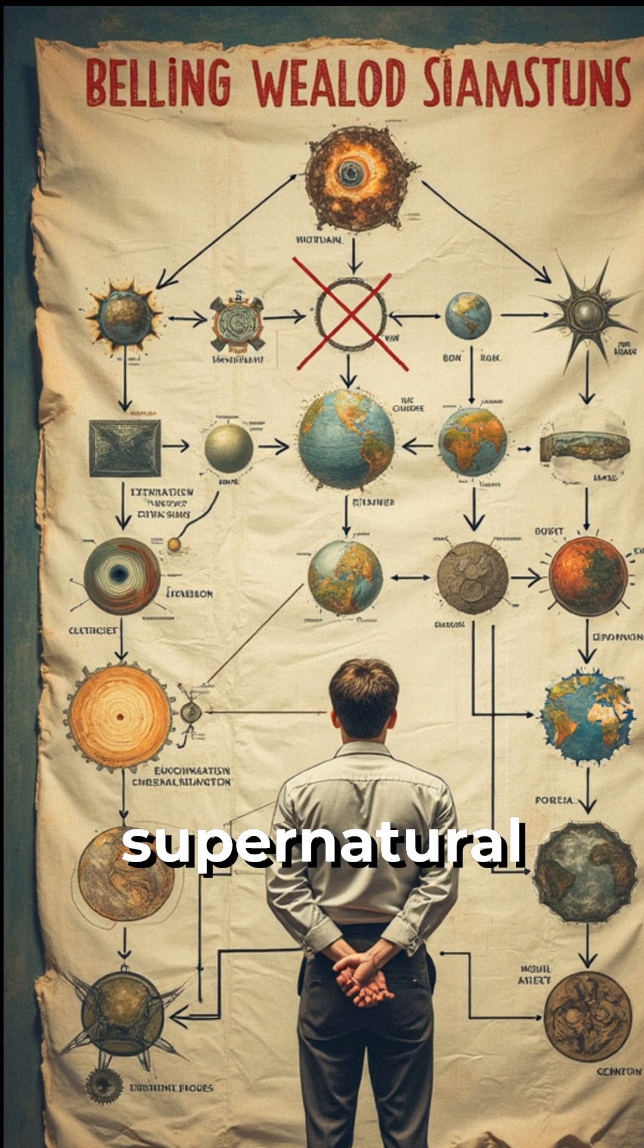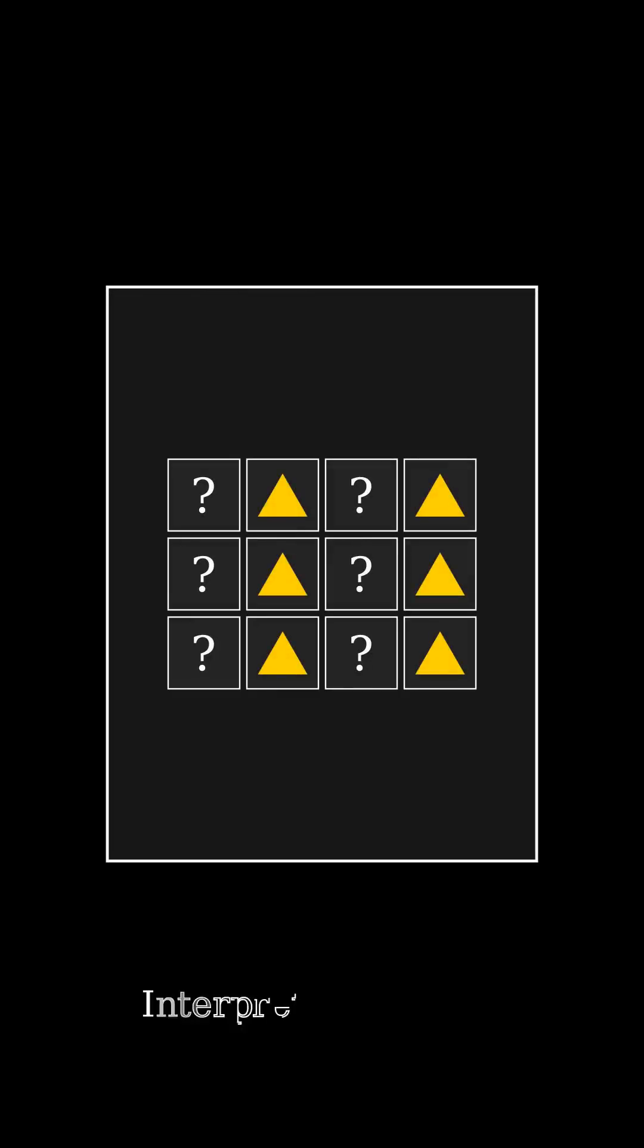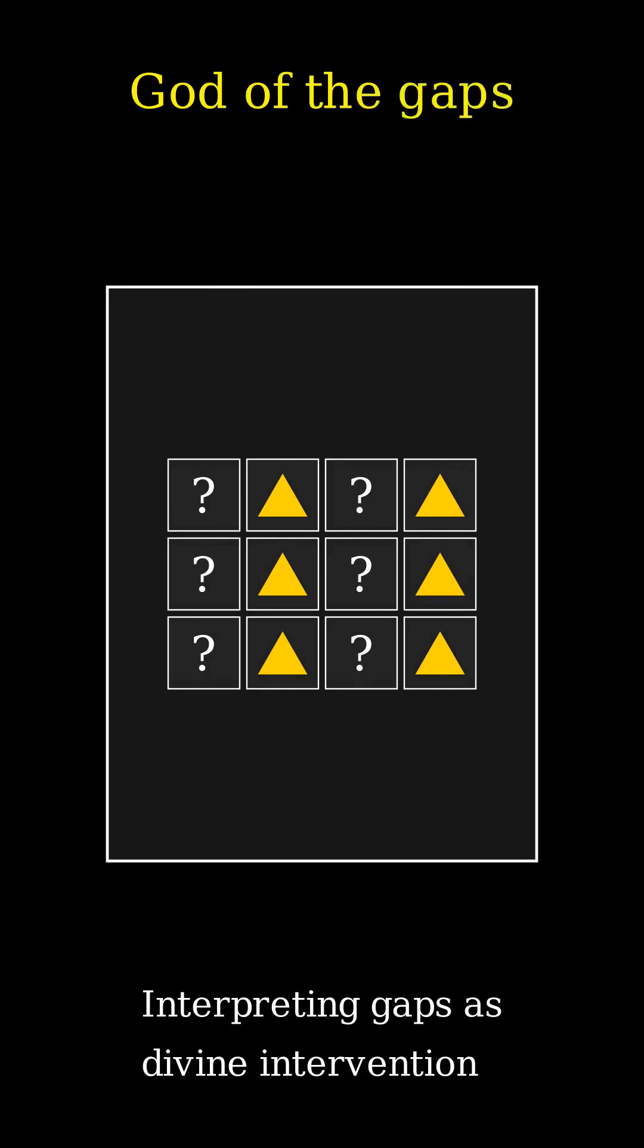Therefore, supernatural explanations are automatically eliminated by definition. In discussions about God and science, the God of the gaps concept is sometimes used to interpret scientific gaps as signs of God's intervention.